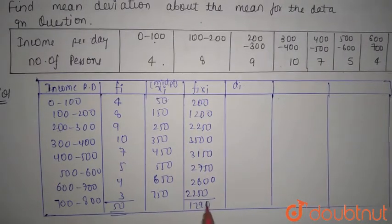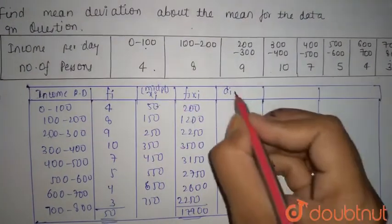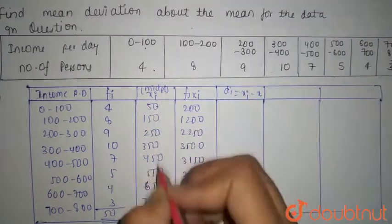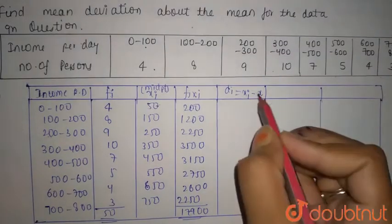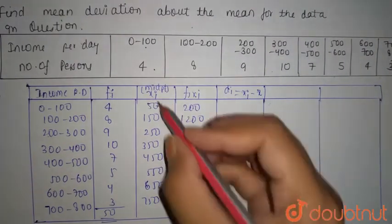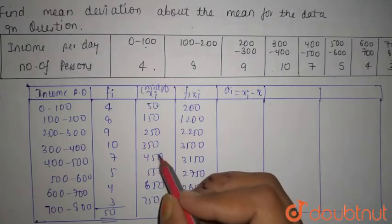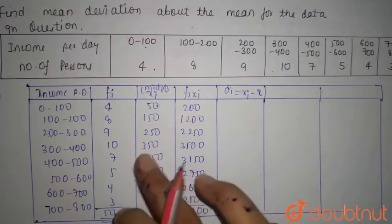Totaling it, this will equal 50, and the total will be 17900. Now what is di here? di will be xi minus x̄. xi is the midpoint minus x̄. Let's take 350 as the assumed mean.